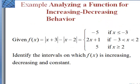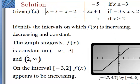If we're going to analyze a function for increasing and decreasing behavior, this particular function here, the absolute value of x plus 3 minus the absolute value of x minus 2, we're given the different pieces of it. So it's negative 5 if x is less than or equal to negative 3. It's the line 2x plus 1 between negative 3 and positive 2. And if x is bigger than 2, then we have 5. So just looking at this here, on graphing it, here's a graph of that function. So we can see that at this point it's constant, then this line is increasing, and then it is constant again.